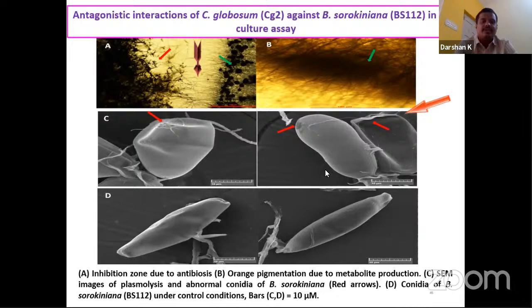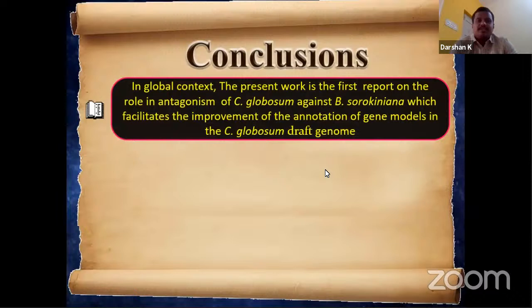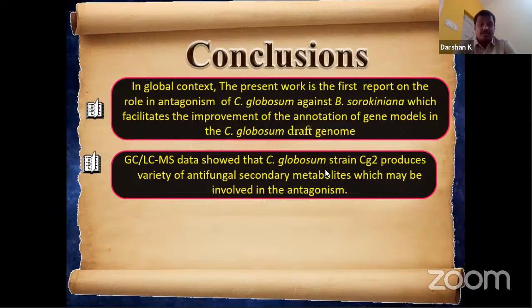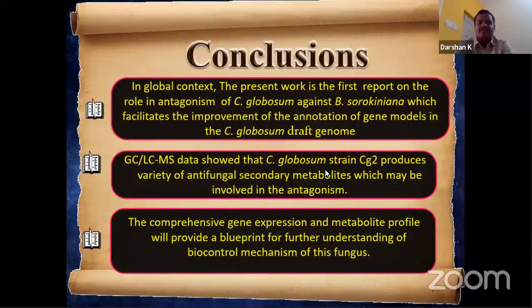In conclusion, this is the first work globally on the role of antagonism in Chaetomium globosum. It will facilitate further annotation of gene models of this organism, for which only one genome is currently available. GC-MS and LC-MS data confirm production of antifungal metabolites involved in antagonism. The comprehensive gene expression and metabolic profiles provide a blueprint for further understanding of the detailed biocontrol mechanism of Chaetomium globosum.